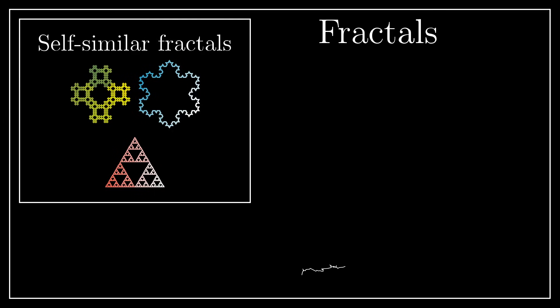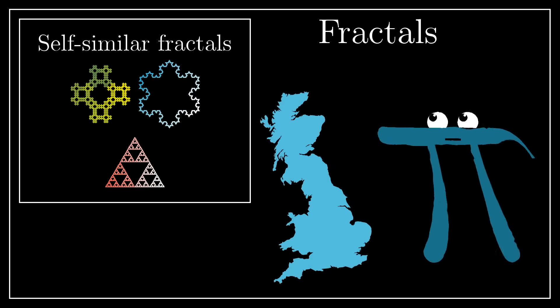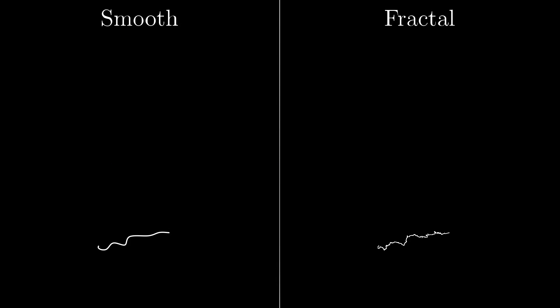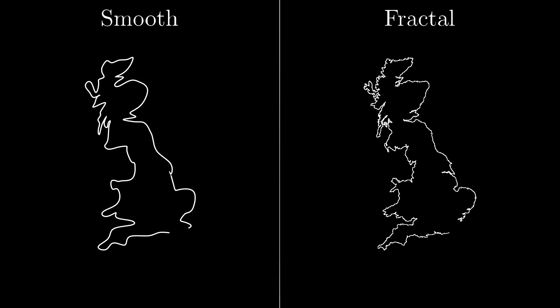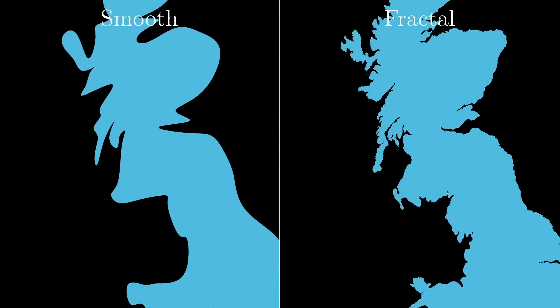But Mandelbrot had a much broader conception in mind, one motivated not by beauty, but more by a pragmatic desire to model nature in a way that actually captures roughness. In some ways, fractal geometry is a rebellion against calculus, whose central assumption is that things tend to look smooth if you zoom in far enough.